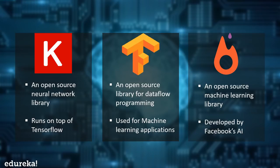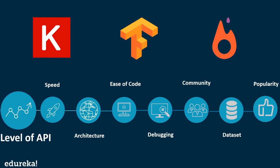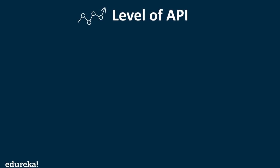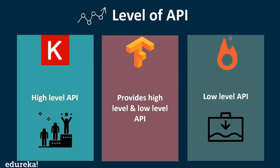All three frameworks are related to each other and perform similar tasks, but let's look at the parameters that distinguish them. The first parameter is the level of API. Keras has a high level API, PyTorch consists of a low level API, and TensorFlow provides both high and low level APIs. Keras runs on top of TensorFlow, CNTK, Theano, or MXNet and has gained favor for its ease of use and syntactic simplicity, facilitating fast development. PyTorch is a lower level API focused on direct work with array expressions, and has become a preferred solution for academic research and deep learning applications requiring custom expression optimization.